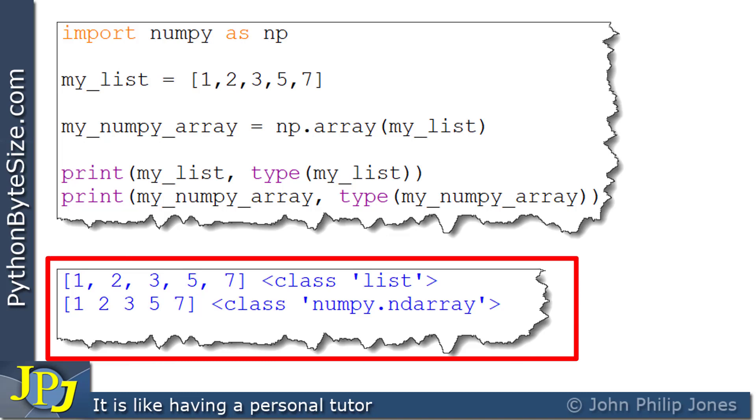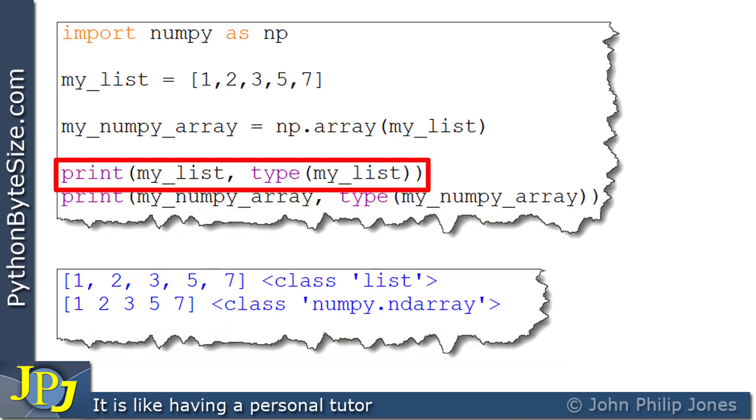this line is going to print my_list, which is the list created on this line, which you can see goes from 1 to 7. And if you look here, you can see that it's been printed out, 1 to 7, where all of the entries are separated by a comma. If we go back to this line,